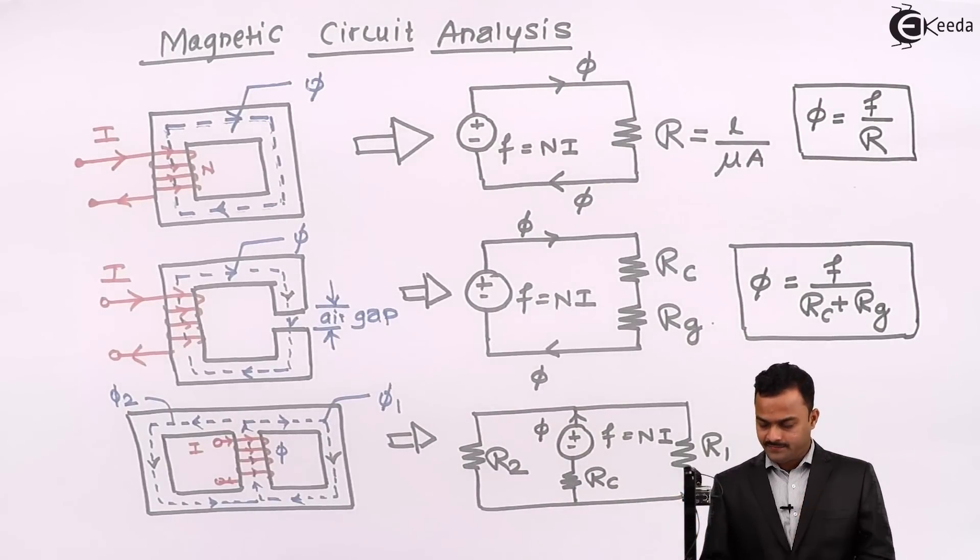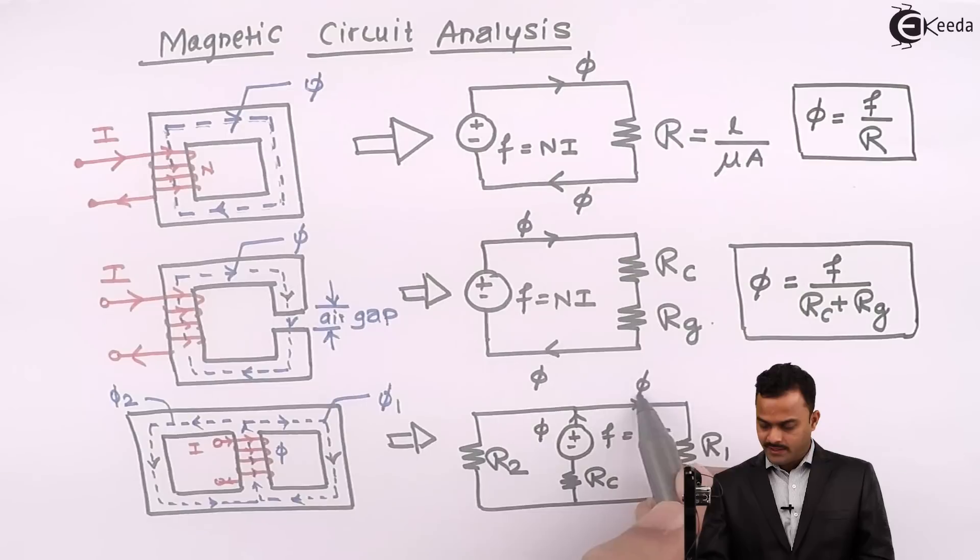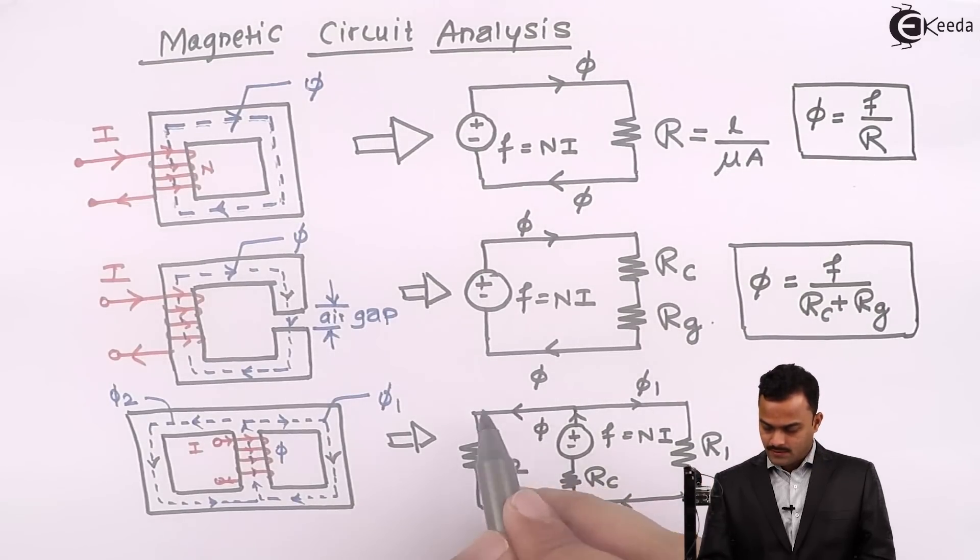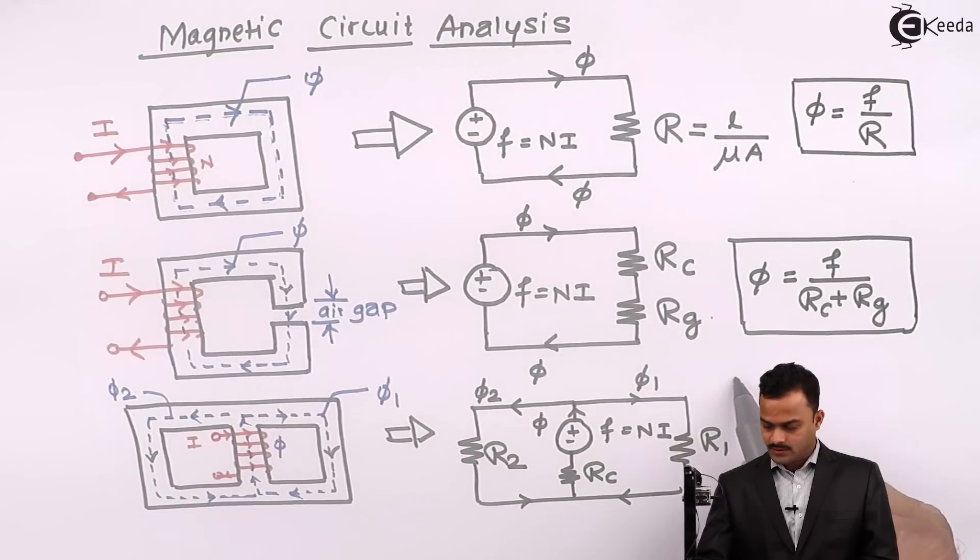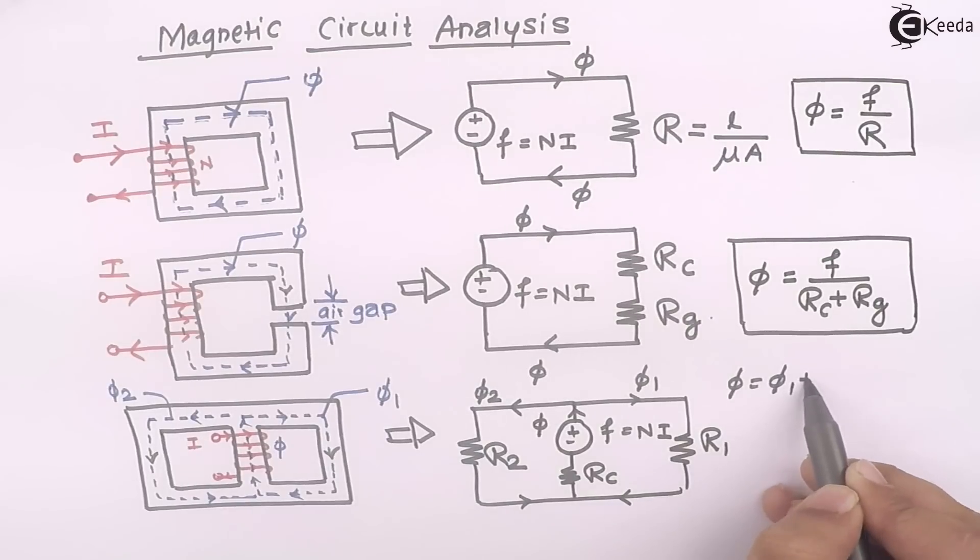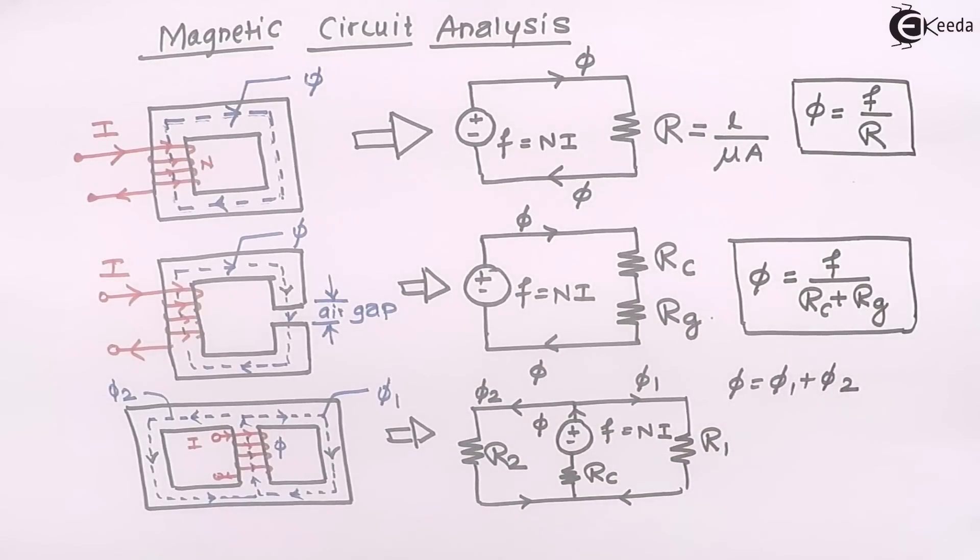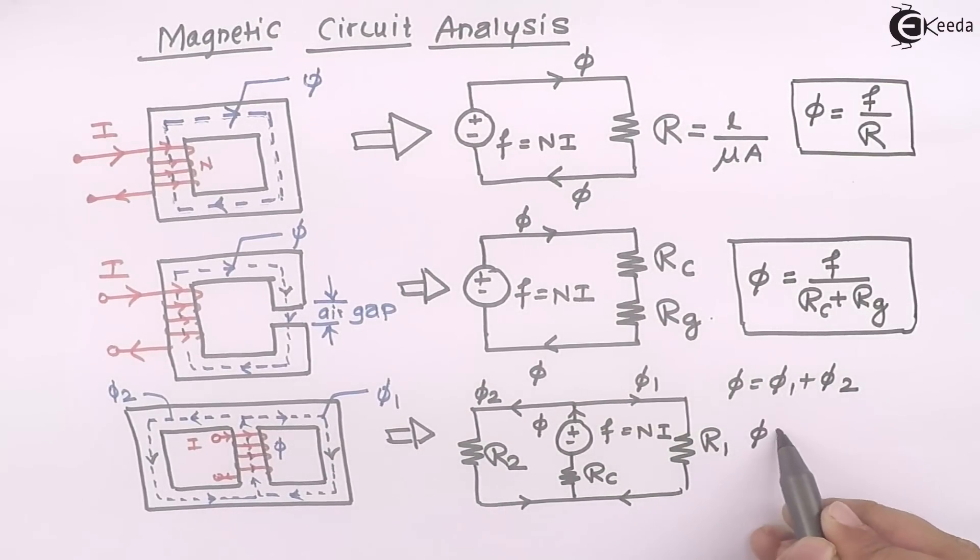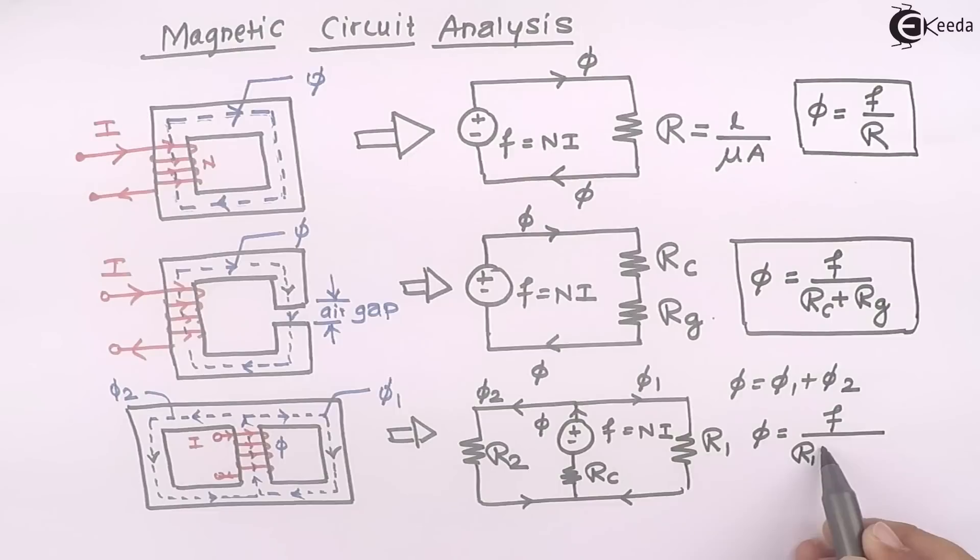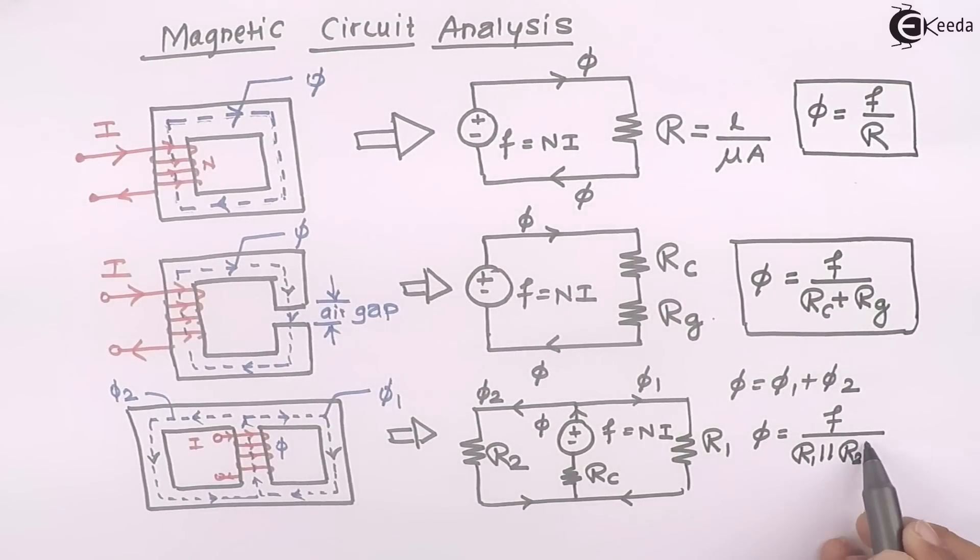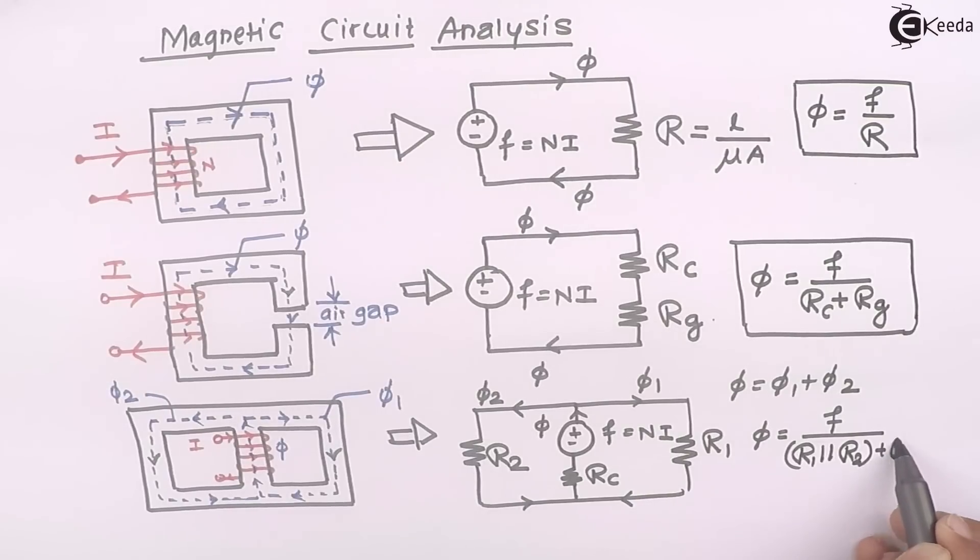MMF will produce a flux φ. But based on the reluctance, there will be a division of fluxes into φ₁ and φ₂. To get the total value of fluxes, that is nothing but the addition of φ₁ and φ₂. And total φ will be nothing but MMF divided by equivalent reluctance, which is nothing but the parallel combination of R₁ and R₂ in series with Rc.